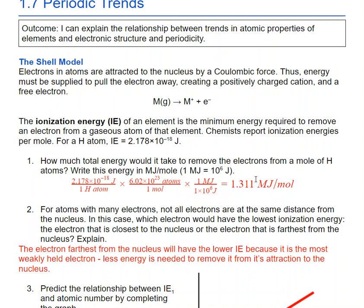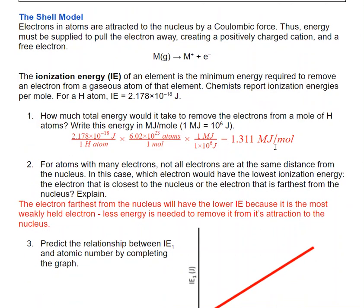For atoms with many electrons, not all electrons are the same distance from the nucleus. Which electron would have the lowest ionization energy — the one closest or farthest from the nucleus? The one that is farthest away is the most weakly held. It has the weakest attraction to its nucleus, so it requires a lower amount of ionization energy to remove it.